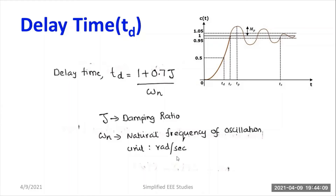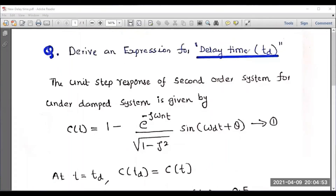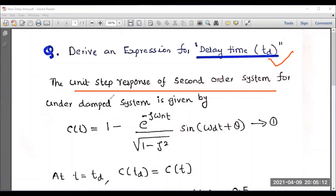Now let us derive the mathematical expression for delay time. The general expression for the second order underdamped system is: C(t) equals 1 minus e to the power of minus zeta omega n t, divided by the square root of 1 minus zeta squared, into sine of omega d t plus theta.